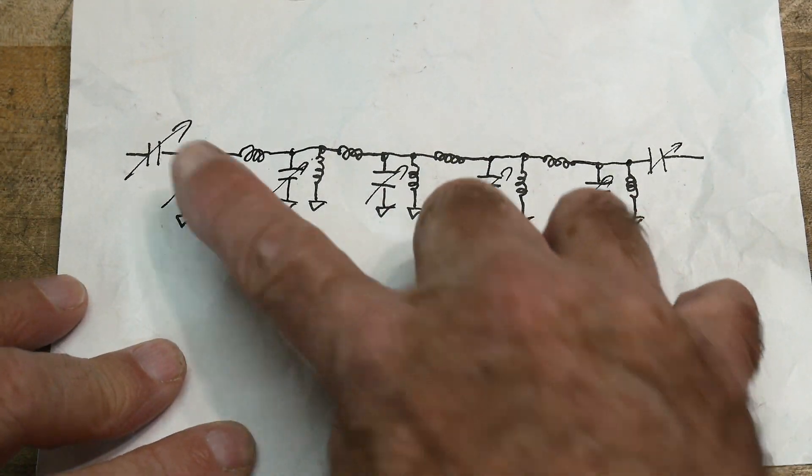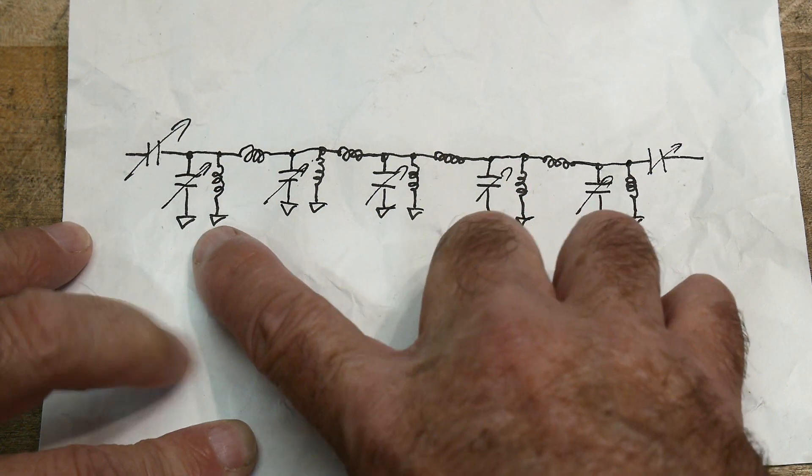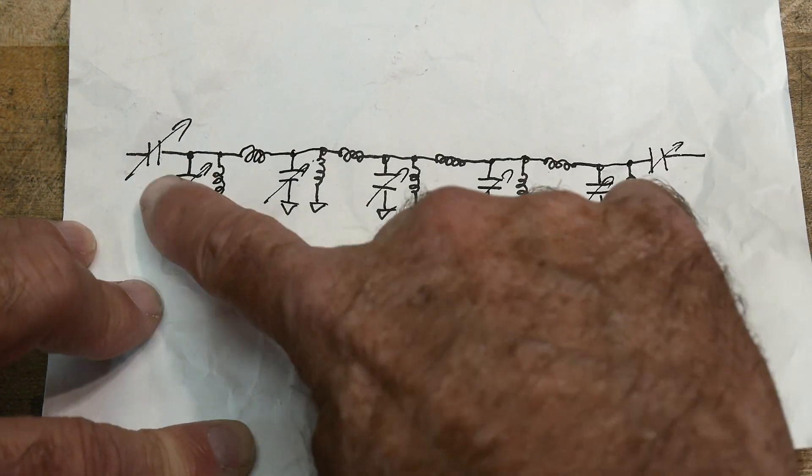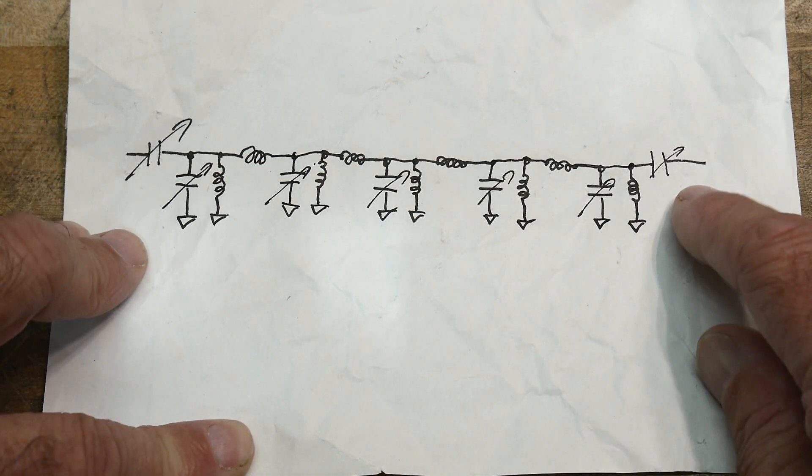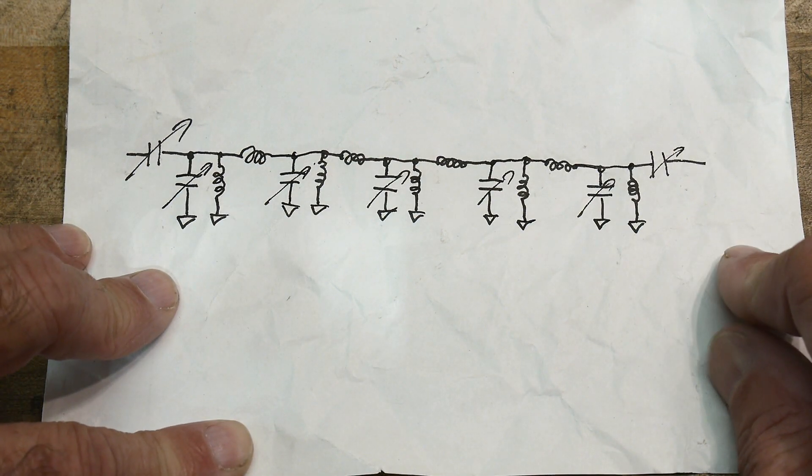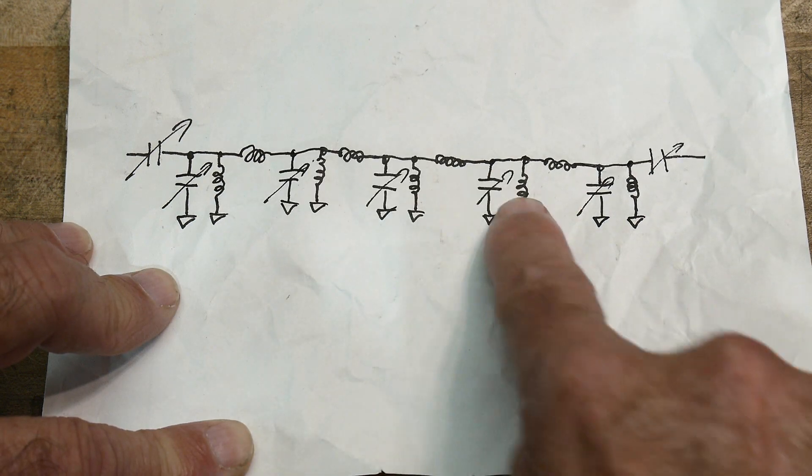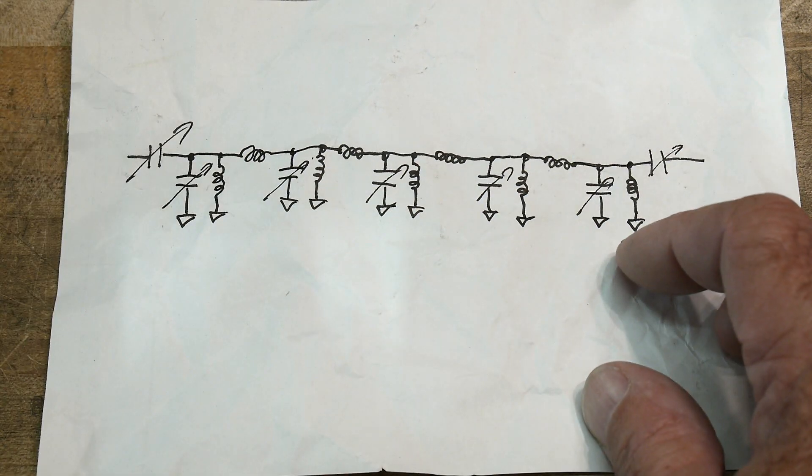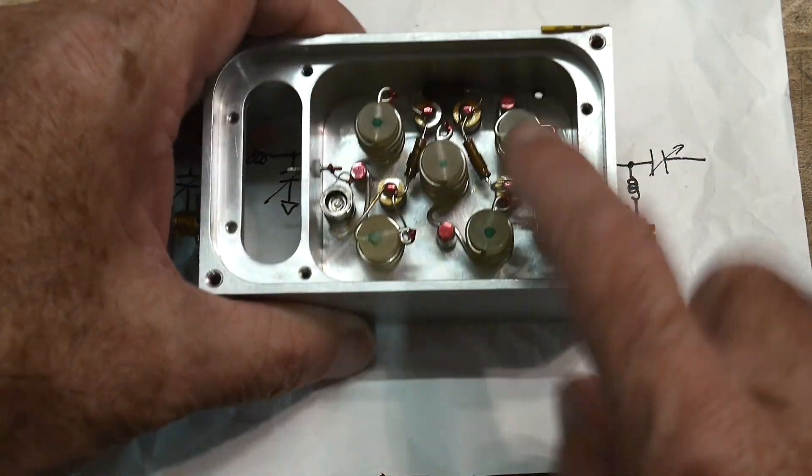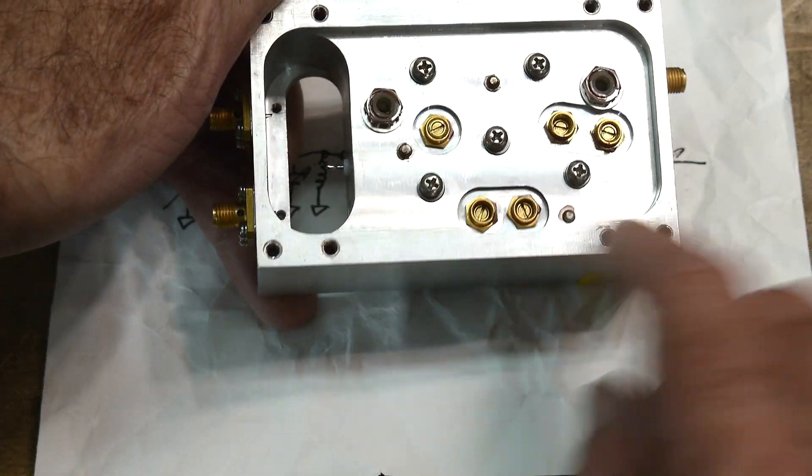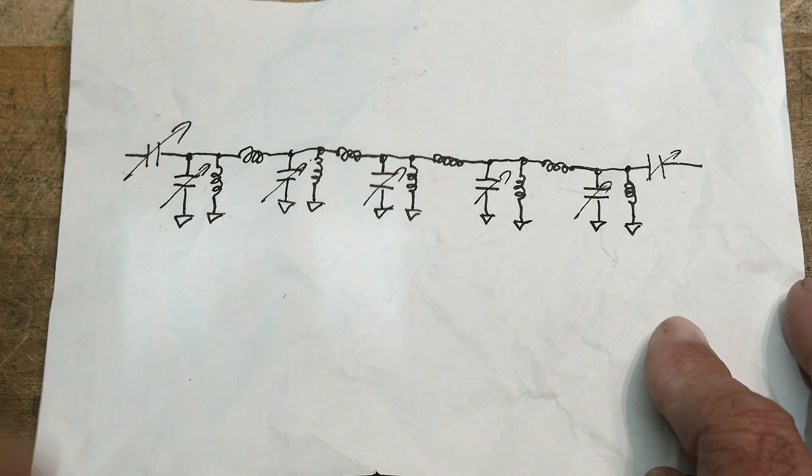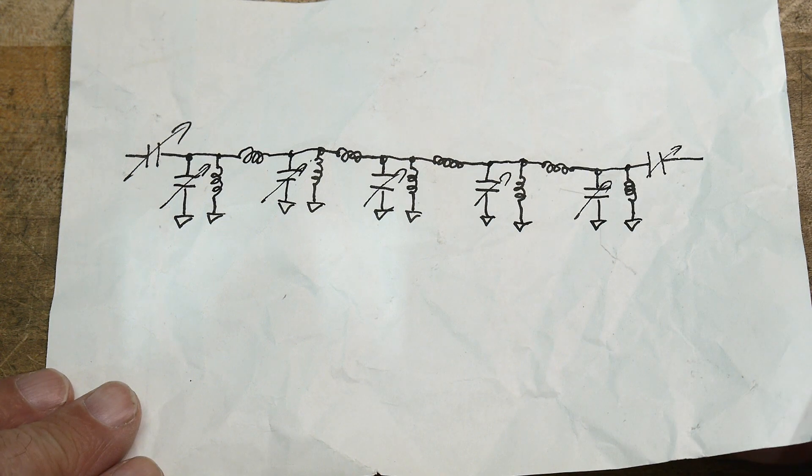So it's a bunch of L's and C's, and all of the C's are adjustable. So that is the filter, one, two, three, four, five, six, seven adjustments. And so those are the seven things we see down here. All right, so that's the filter, nothing really exciting going on there.